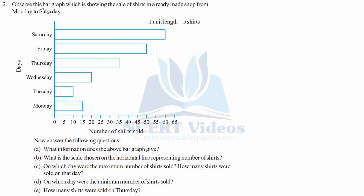Question 2: Observe this bar graph which shows the sale of shirts in a ready-made shop from Monday to Saturday. Days are on the vertical axis and one unit length equals five shirts, with number of shirts sold on the horizontal axis. Answer the following: part A — what information does the bar graph give? Part B — what is the scale chosen on the horizontal line representing number of shirts?